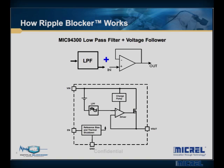Let's talk a little bit about how this works. The MIC 94310 can be modeled as a voltage follower with a low-pass filter. The MIC 94300 integrates a low RDS(on) switch with a low-pass filter that basically passes DC voltage and blocks the AC component of the input voltage. In addition, it also provides the designer with a logic-controlled enable input to enable full control of power sequencing requirements.